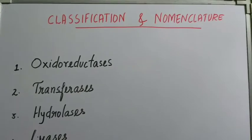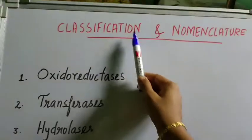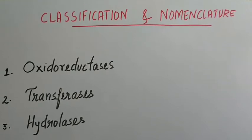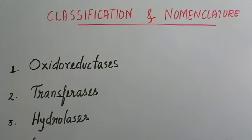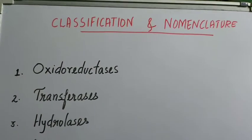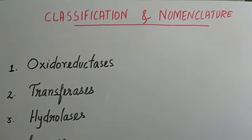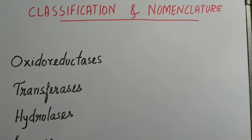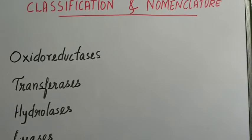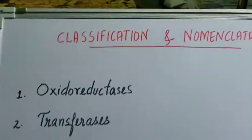Let us now look at the classification and nomenclature of enzymes. According to the International Union of Biochemistry, enzymes have been classified into different groups based on the type of reaction that they catalyze. Six different classes of enzymes are there, and each group has been subdivided into subclasses as well. But here we will be mainly discussing about only the six different major classes of enzymes.